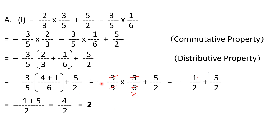Five and five cancel out, three goes into six twice, giving minus one by two. So we have minus one by two plus five by two. The denominators are the same, so we add the numerators: minus one plus five equals four. Therefore four by two equals two — that is the final answer.